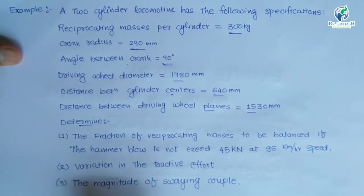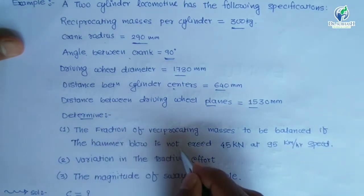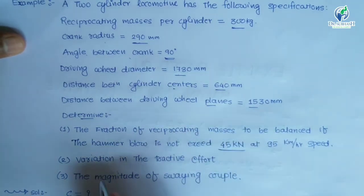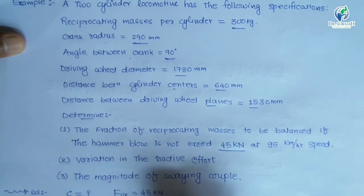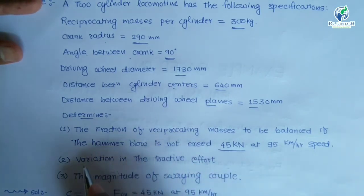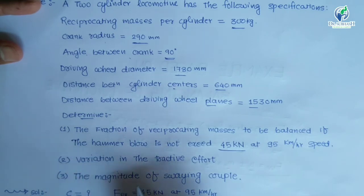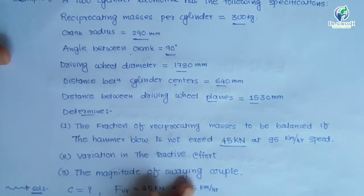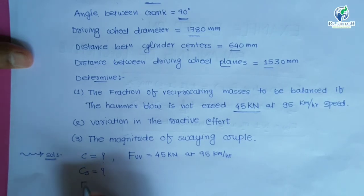We have to calculate C, the fraction of reciprocating mass to be balanced. Second, if the hammer blow F_UV does not exceed 45 kN at a speed of 95 km per hour, we need to calculate the variation in tractive effort Ft and third, the magnitude of swaying couple Cs. So we are going to calculate: fraction of reciprocating mass to be balanced, tractive force Ft, and swaying couple Cs.